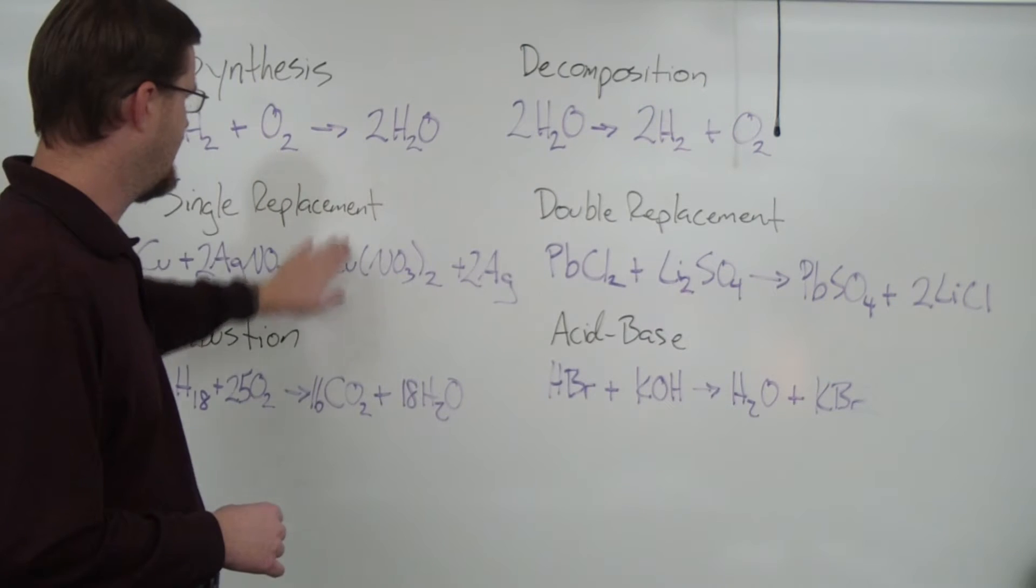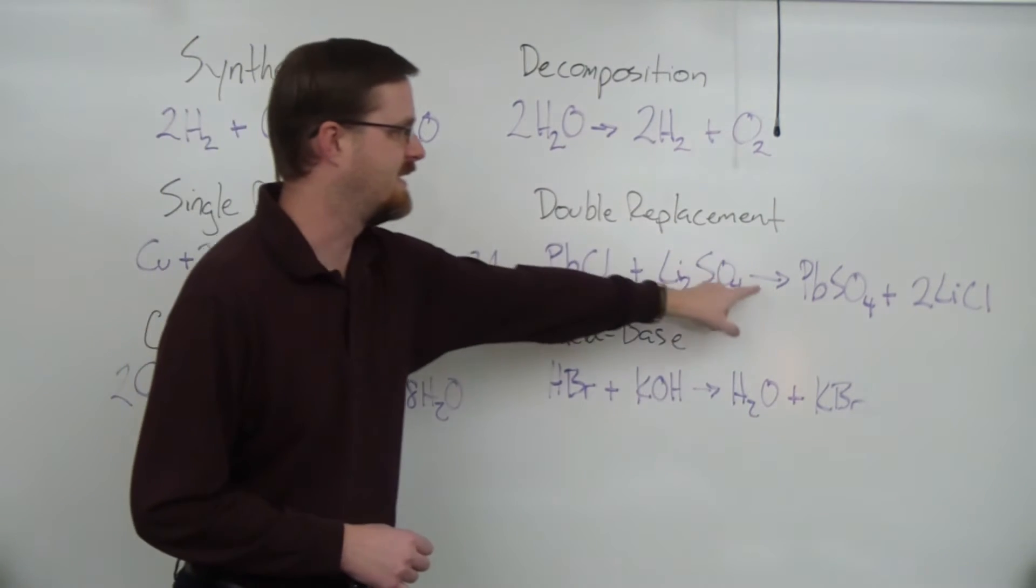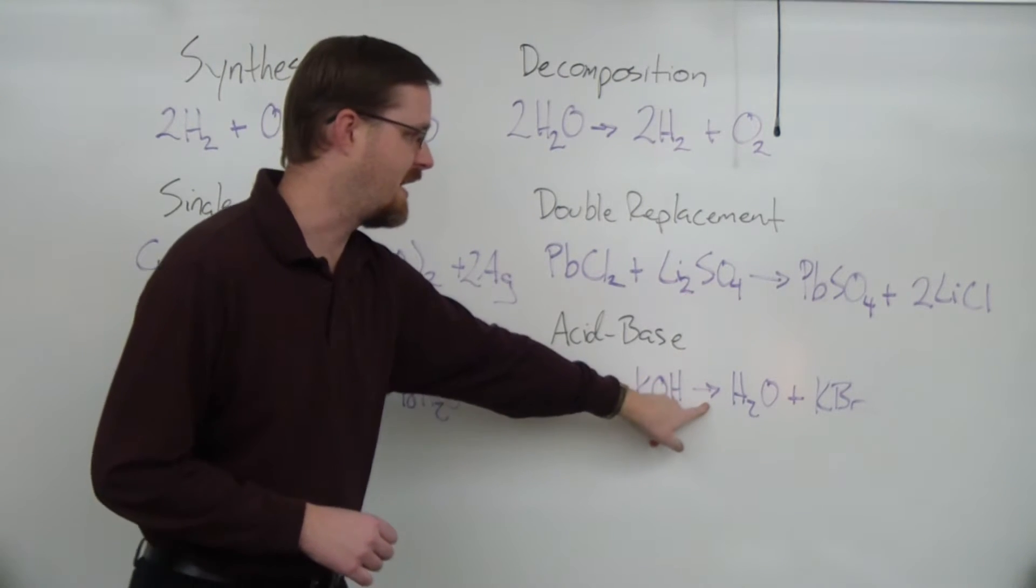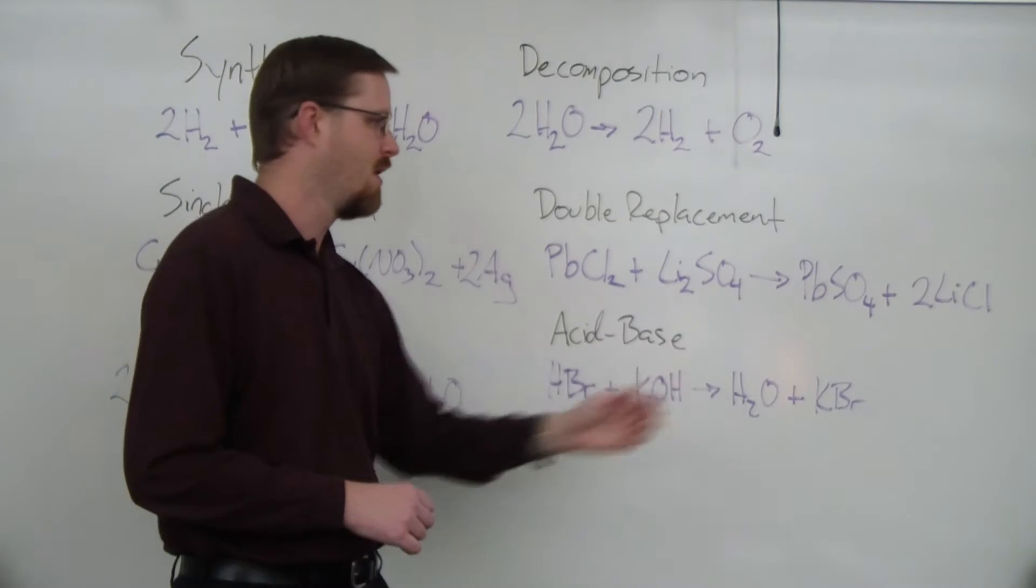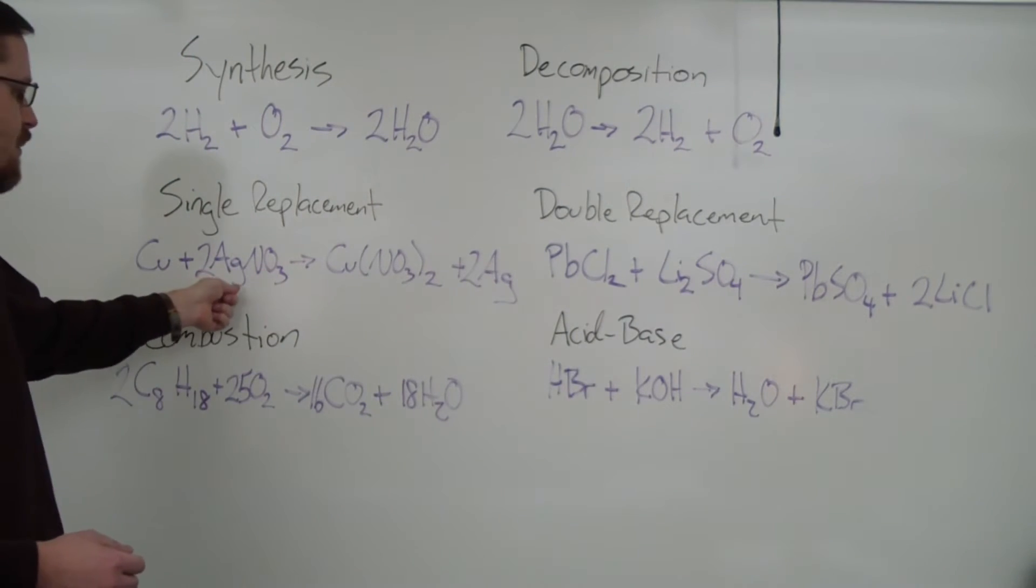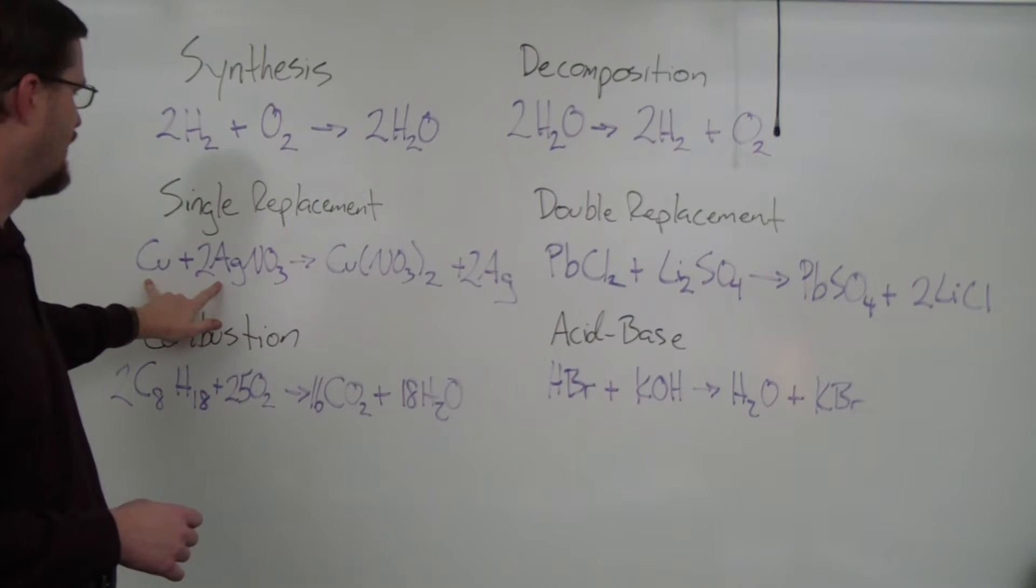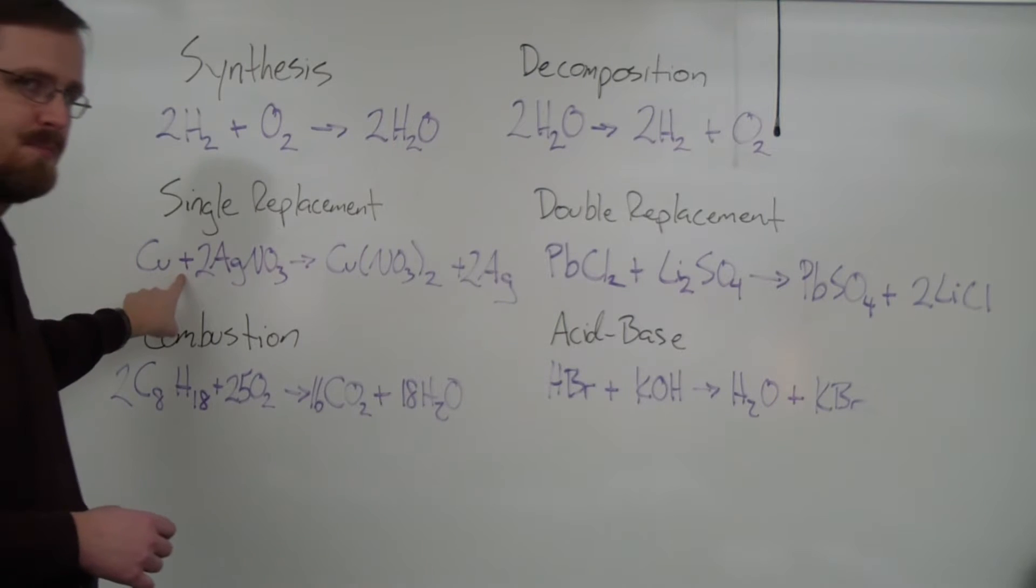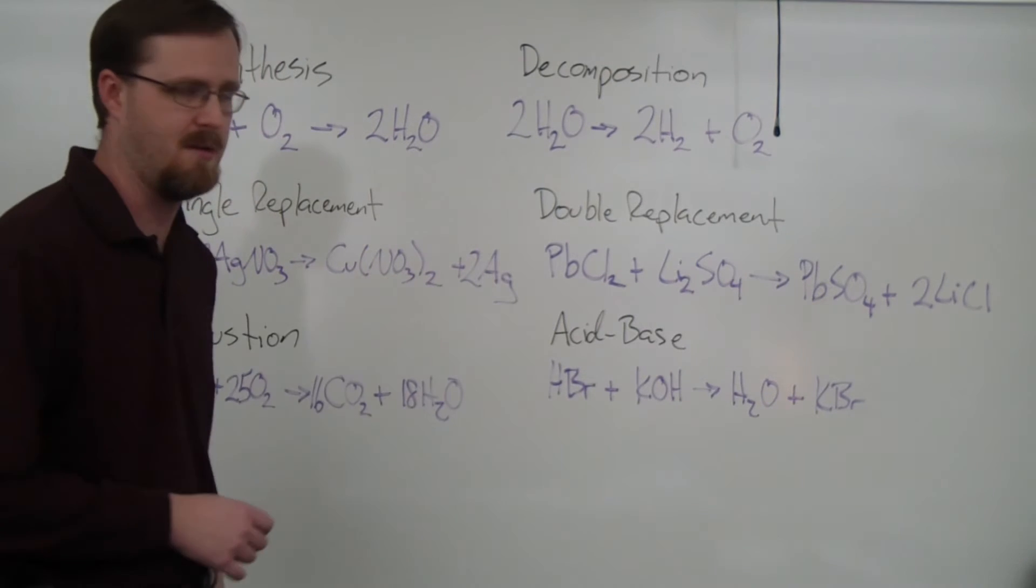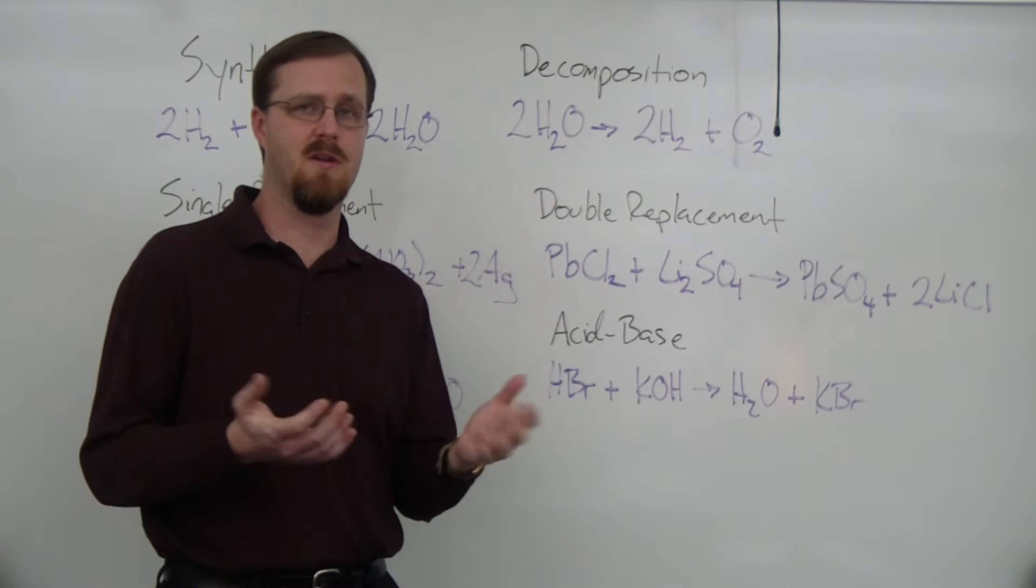Let's take a look at each of these examples here, and you'll notice that every single one of these has an arrow right in the middle of the equation pointing towards the right. This arrow is what separates the reactants from the products. Between the two reactants, they are separated by a plus sign, and between the two products, they are also separated by a plus sign. And that is actually about where the similarities end.